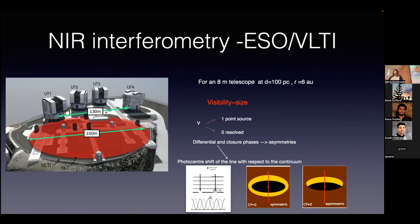The atmosphere changes very quickly at near-infrared wavelengths, causing corruption of the signal. We work in the UV plane with three main observable quantities. The first is visibility: the contrast of the fringes, which gives an estimate of the size of the emitting region. Visibility is a normalized value — one is a point source, zero is something completely resolved. Instead of the actual phase, we use differential and closure phases. The differential phase is the photocenter shift of the line with respect to the continuum. The closure phase requires at least three telescopes and gives an idea of asymmetries in the circumstellar environment.